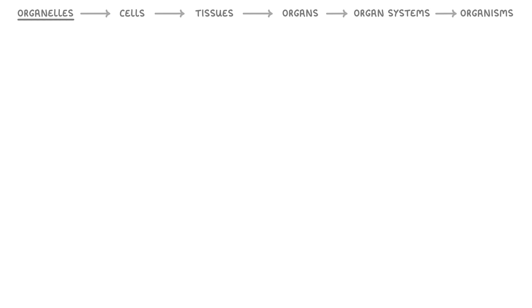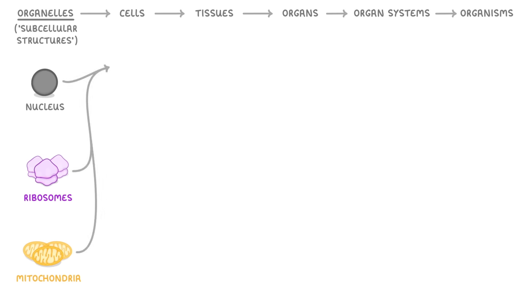Let's start with organelles, which are also called subcellular structures. These are the parts that make up a cell, like the nucleus, ribosomes, and mitochondria. Each individual organelle has a specific role to play, and when combined, multiple organelles will form a single cell.